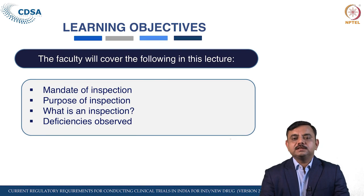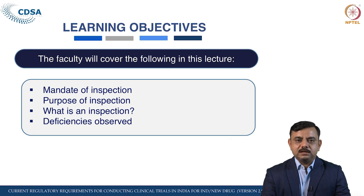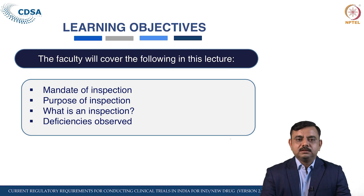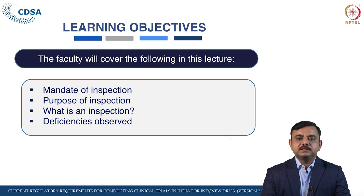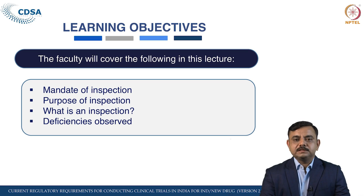In our previous lecture, lecture 19, we saw the common observations and deficiencies at the submission of protocols. In this lecture, the learning objectives are: the mandate of inspection, which rule governs it, the purpose and types of inspection, types of deficiencies, obligations, and potential punishment.